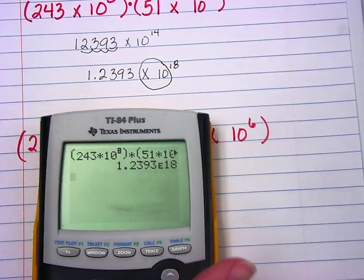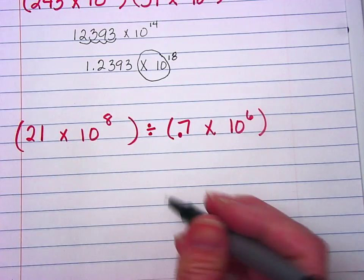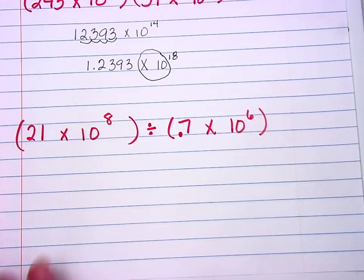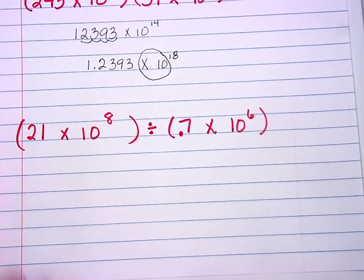You will not get your full credit. Alright, next problem, we have 21 divided by decimal 7.